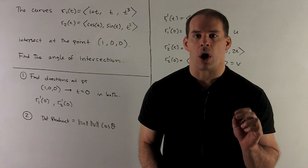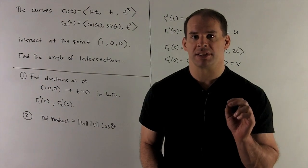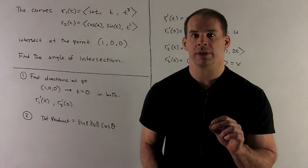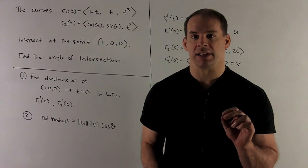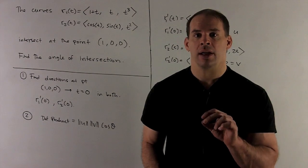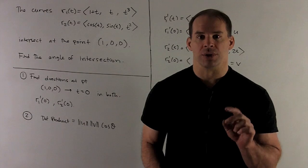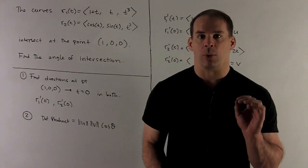We have two curves: R1 of t equals (1 plus t, t, t cubed), and R2 of t equals (cosine t, sine t, t squared). They intersect at the point (1, 0, 0). Find the angle of intersection at that point.